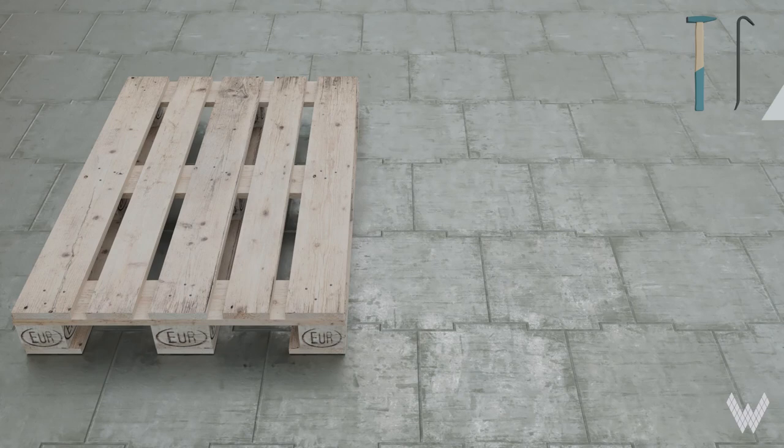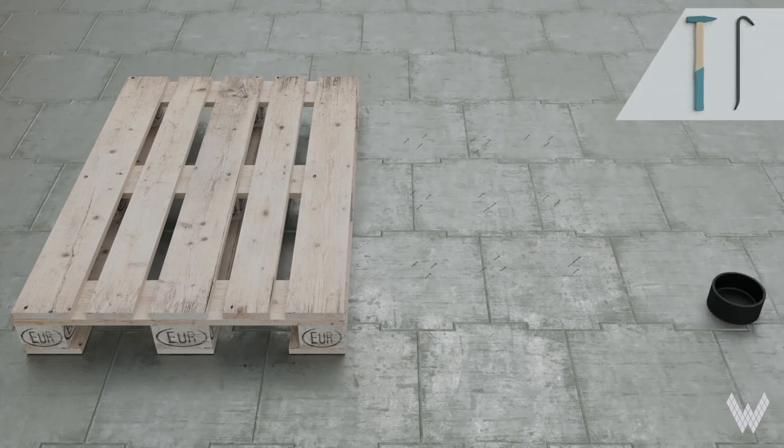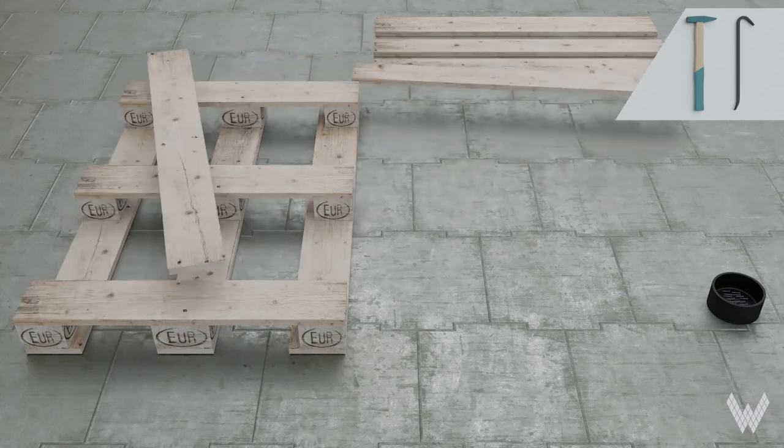In the beginning we take the jimmy, and in this case the hammer, and remove all the nails and the planks of the pallet and arrange them on the ground.